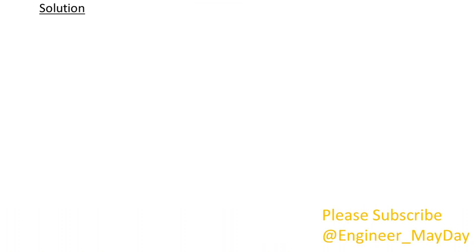Solution. Part A: Obtaining the maximum axial force: F max equals w plus wr, where wr is the weight of the rod. Wr equals mg, which equals density gamma times area A times length L times gravitational acceleration g.